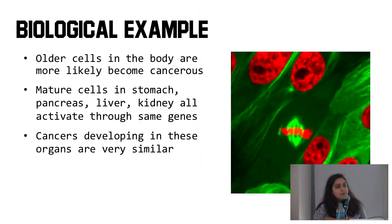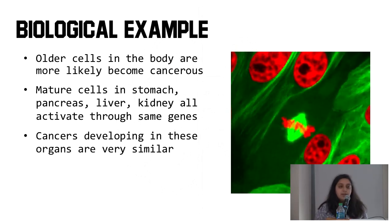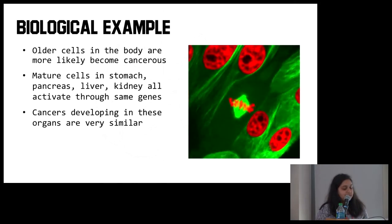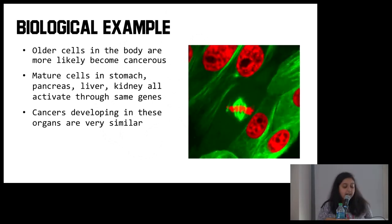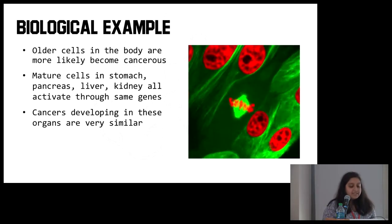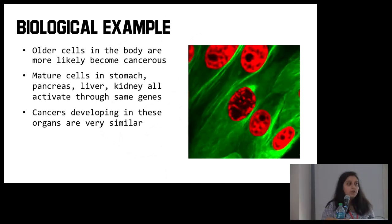So a biological example. Older cells in the body are more likely to become cancerous, and mature cells in the stomach, pancreas, liver, kidney, they all activate through a similar gene path. And so if mature cells in those organs become cancerous and you only label them as stomach cancer or kidney cancer, the types of cancers that they progress to are actually really related. You're missing out on all of those interconnected relationships and patterns that you could be using to help diagnose and treat it.